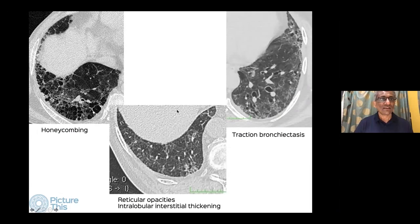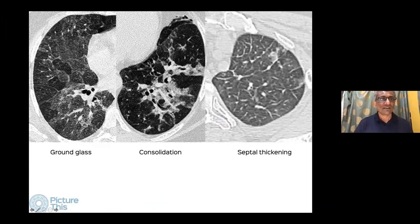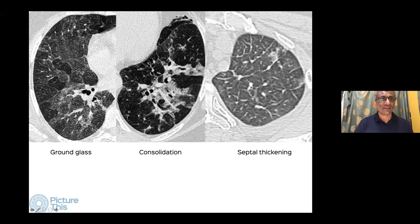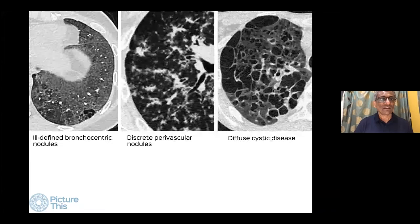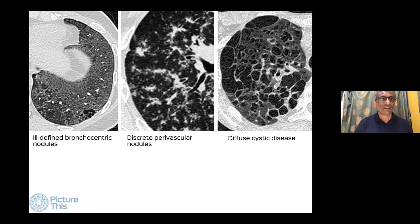Signs of a fibrotic ILD: honeycombing (cysts with shared walls stacked sub-pleurally), traction bronchiectasis, and reticular opacities (intralobular interstitial thickening). Signs of a non-fibrotic ILD — five signs: ground glass (increased opacity not obscuring vessels), consolidation (increased opacity obscuring vessels), septal thickening (interlobular), ill-defined bronchocentric nodules, and discrete nodules. Cystic lung disease is a separate entity. You can have combinations, and then there is cystic lung disease. Once we've differentiated non-fibrotic from fibrotic, the next question is: is it IPF or non-IPF?